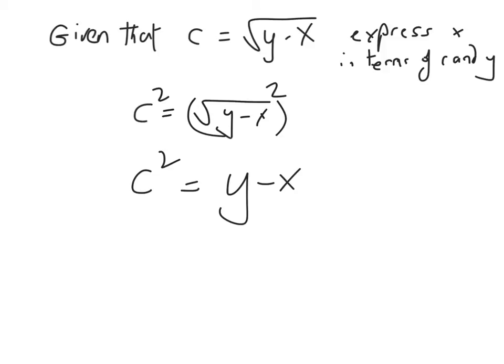Okay, so final step is we want x on its own. So maybe we'll bring the minus x and bring it over here to become plus x and bring this c squared over here to become minus c squared. So now you can see we've complied with what the question asks us to do. Express x in terms of y and c.